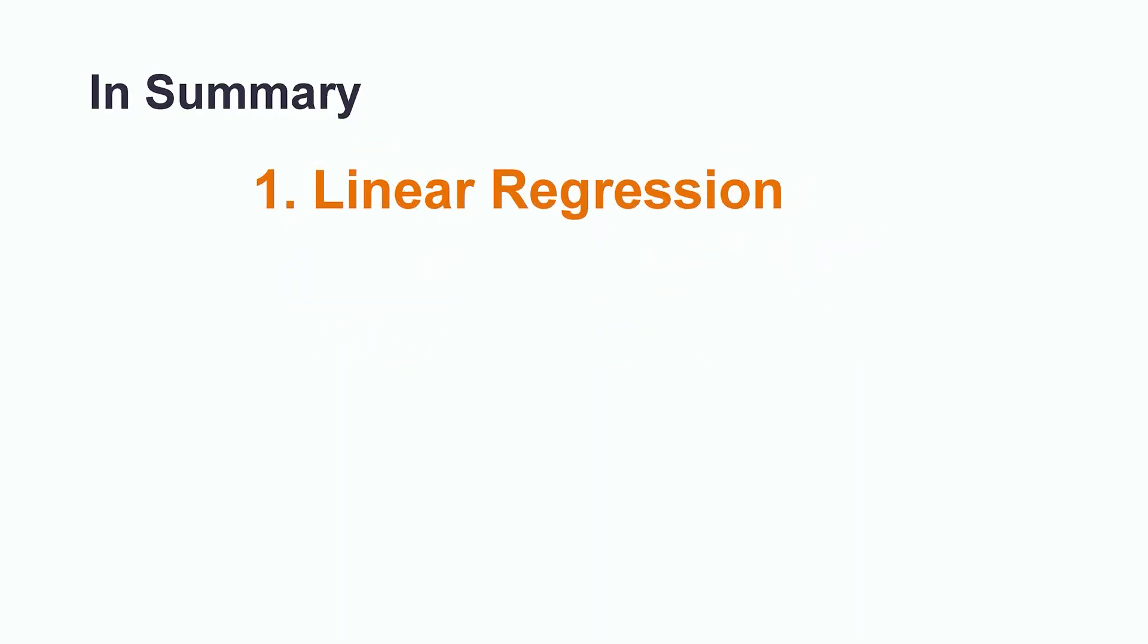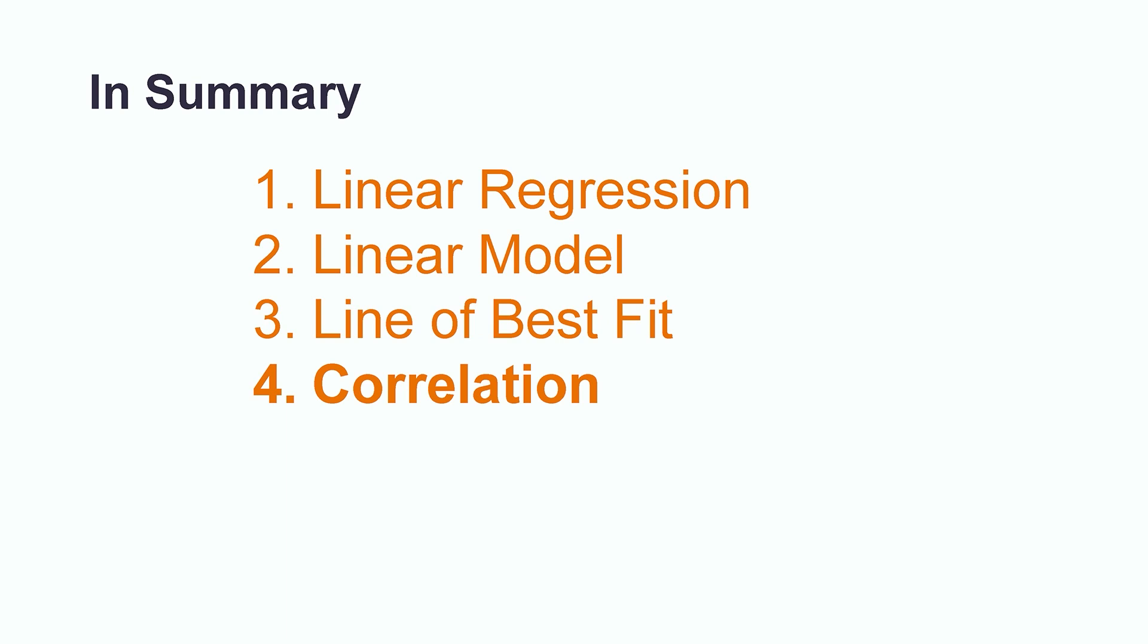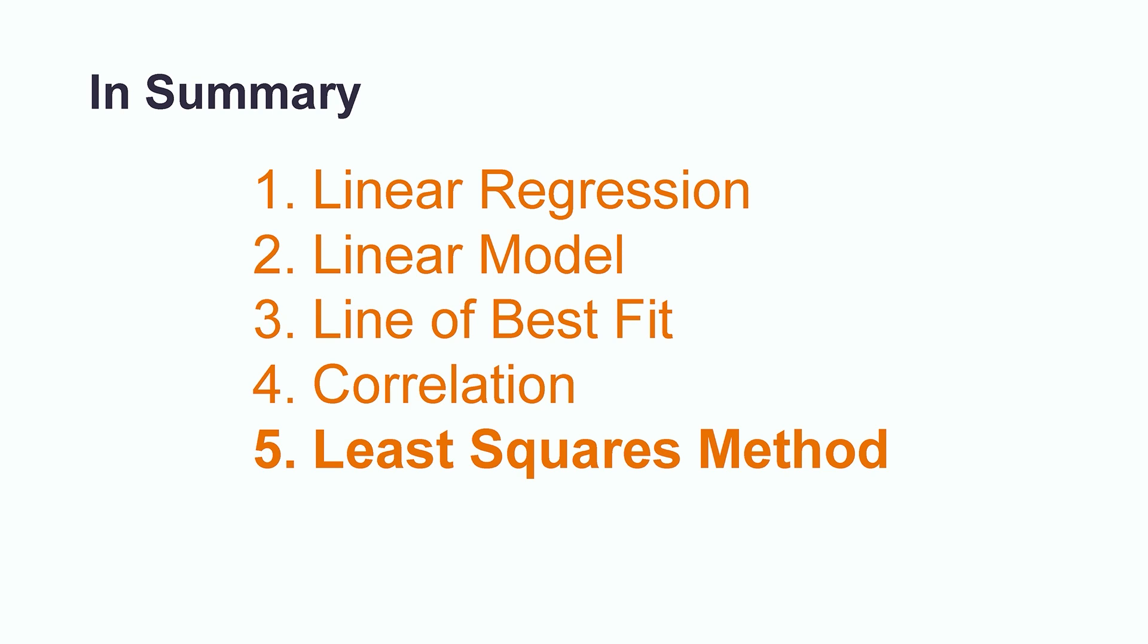In summary, linear regression refers to the process of finding a linear model or line of best fit to describe a correlation or a relationship between data. We used the least squares method to find the line of best fit, but there are other methods out there as well, even if they are less common.